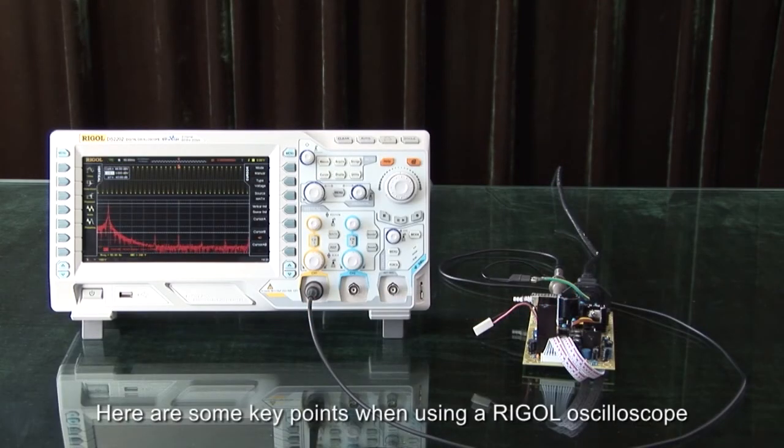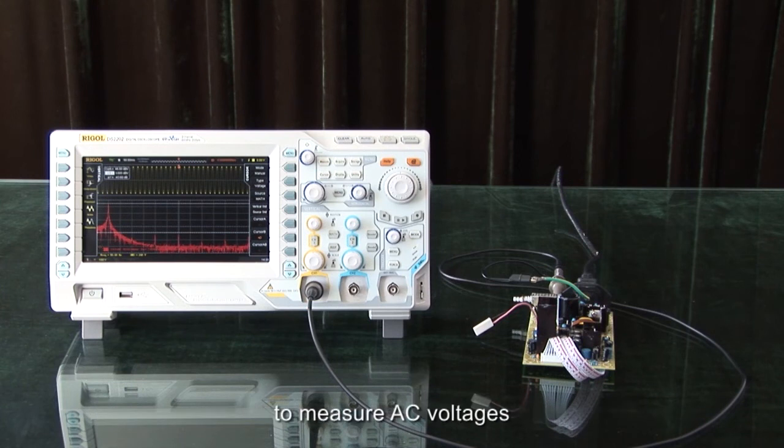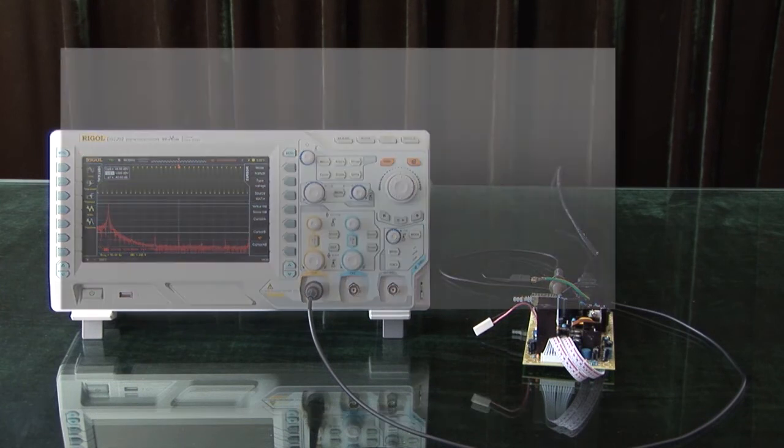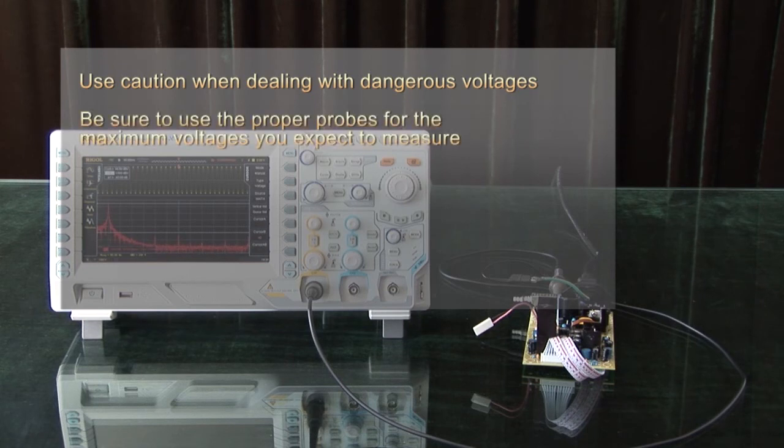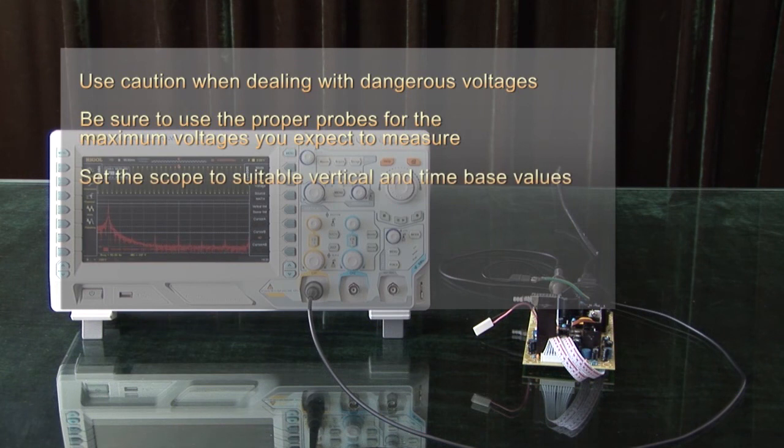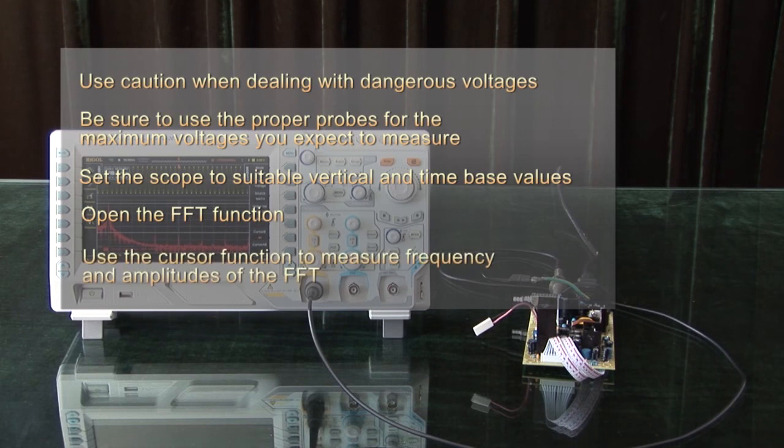Here are some key points when using a Rigol oscilloscope to measure AC voltages. Use caution when dealing with dangerous voltage. Be sure to use the proper probes for the maximum voltages you expect to measure. Set the scope to suitable vertical and time-based values. Open the FFT function, and use cursor functions to measure frequency and amplitudes of the FFT.